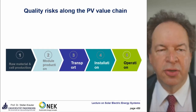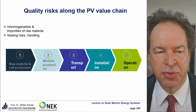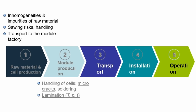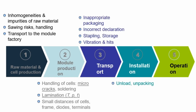Looking at the entire value chain, damage can occur during sawing or handling of wafers, transport to the module factory, handling of cells, and soldering — all of which can cause micro cracks. At the lamination stage, issues include incorrect temperature, uneven temperature distribution, wrong pressure, or incorrect duration. During installation there can also be problems: unpacking, handling, and treatment during installation often suffer from high cost pressure, as workers are paid per module installed.